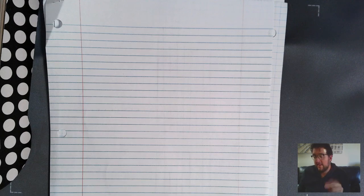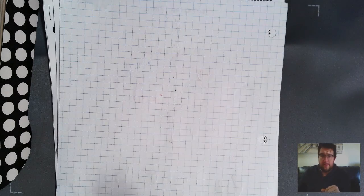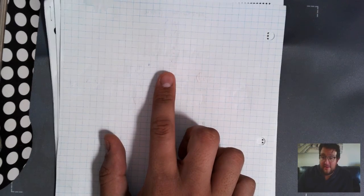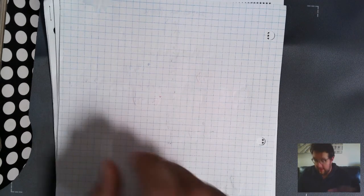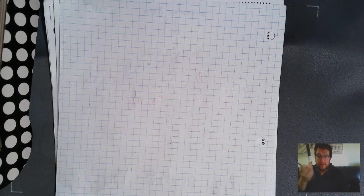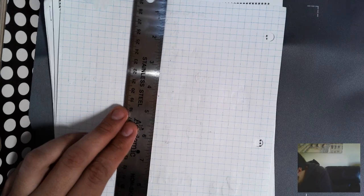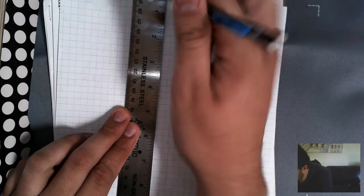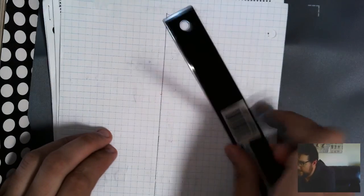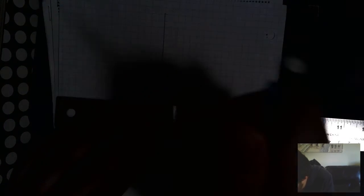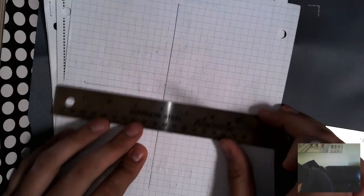Some of you maybe have graph paper. If you have graph paper, I highly, highly recommend using graph paper because you can really quickly just grab a ruler, throw it down the middle. You can set up your Cartesian plane. Number it. One, two, three, negative one, negative two, negative three. And then you can go from there.